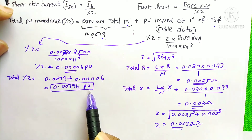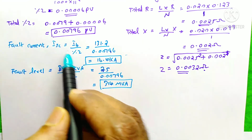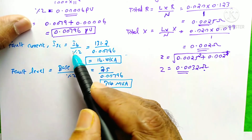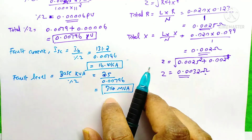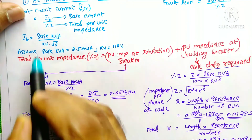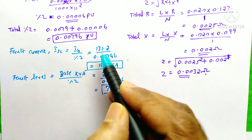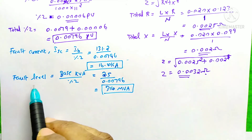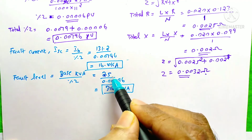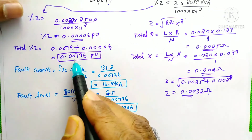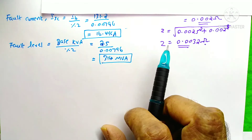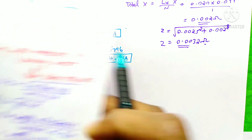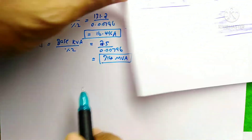The fault current ISC = IB / per unit impedance. IB remains 131.2 Amps (base KVA and KV are unchanged). So ISC = 131.2 / 0.00796 = 16.4 kilo Amps. The fault level = 2.5 MVA / 0.00796 = 314 MVA. Comparing to the previous values: the short circuit current was 16.6 kA but is now 16.4 kA, and the fault level was 316.46 MVA but is now 314 MVA.